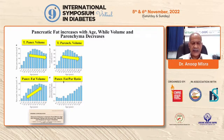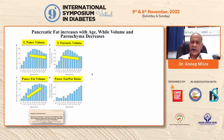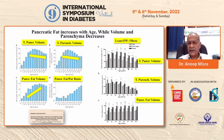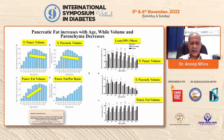This pattern is different in patients who are obese, overweight, or lean. Total parenchymal volume and total fat volume are higher in obese people compared to overweight and lean people. We shall see what happens in patients with diabetes subsequently.